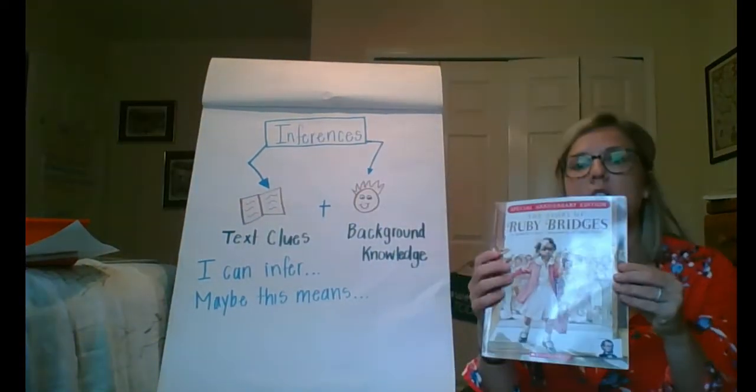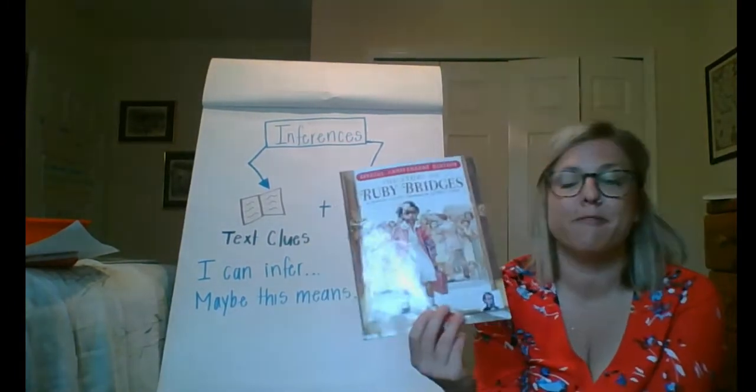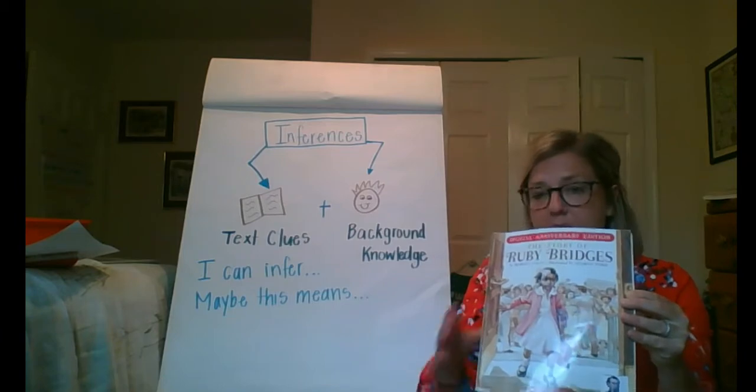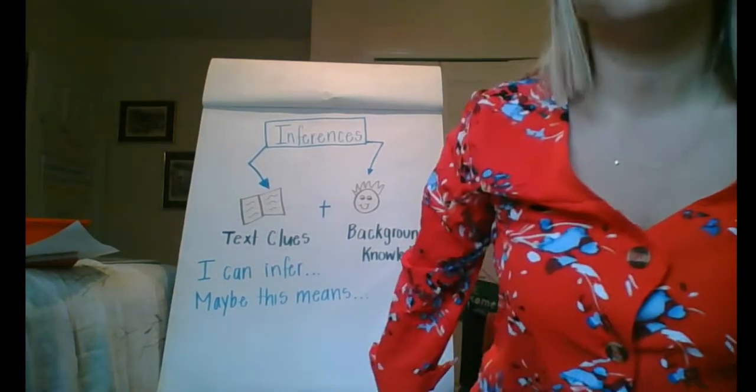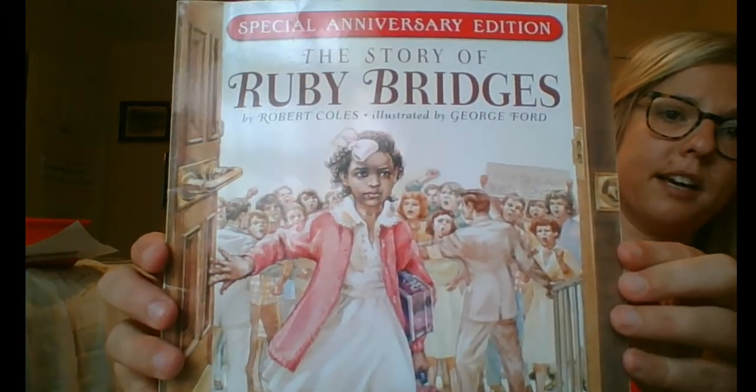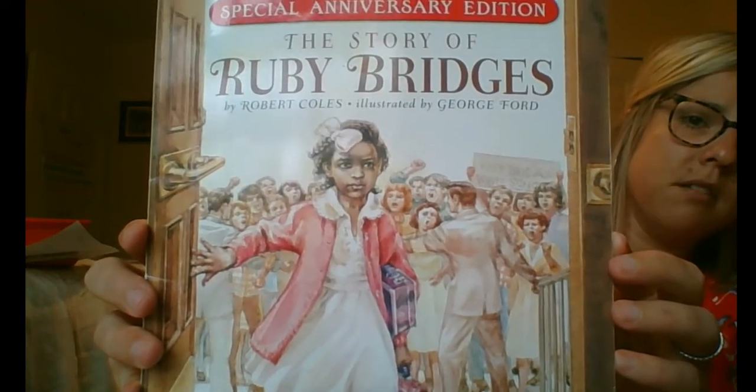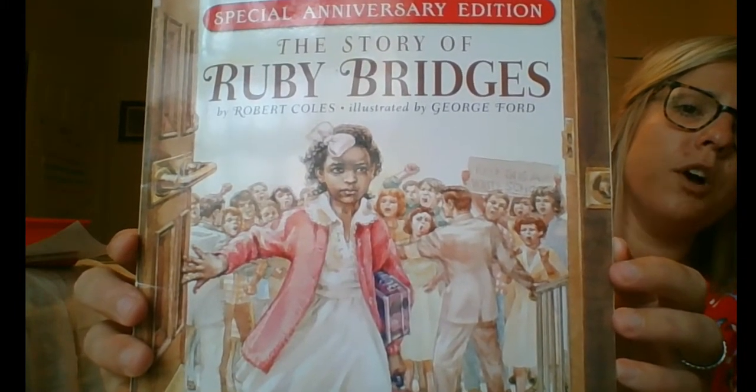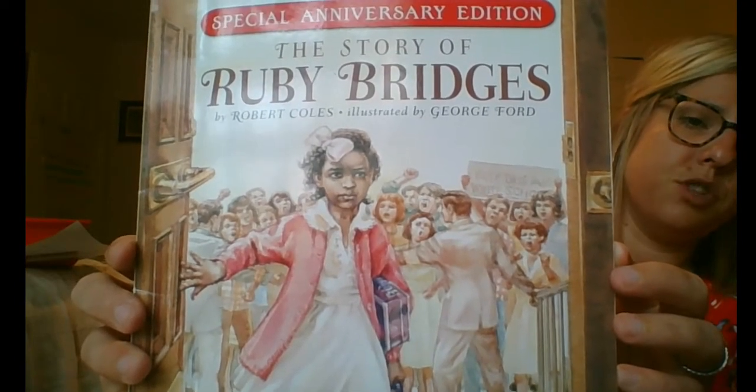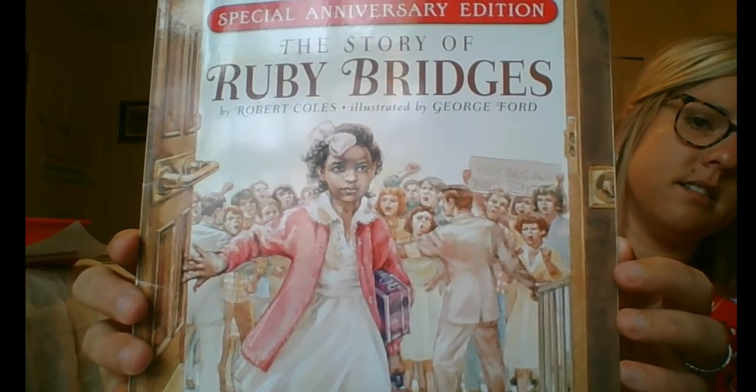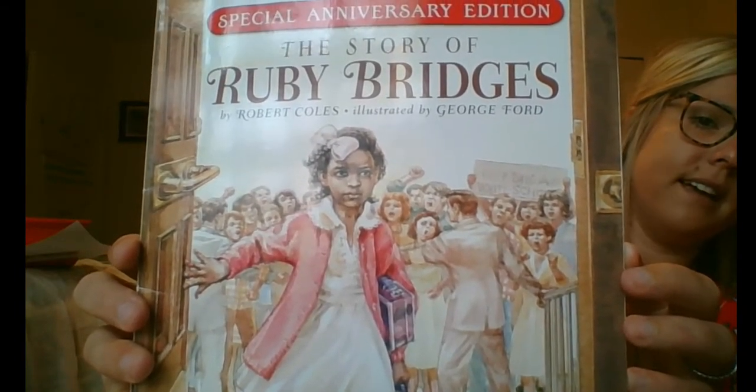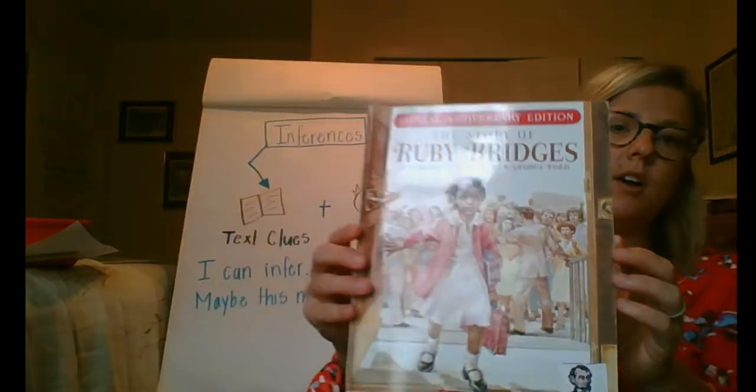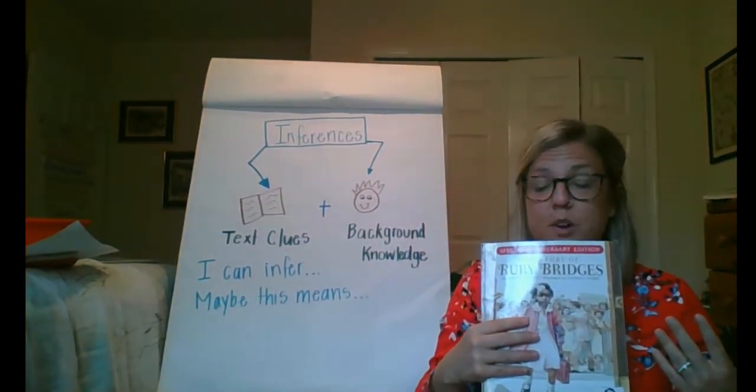Today we're going to focus on a book that some of you are very aware of or have read before. It's one of my favorite books called Ruby Bridges, and we're actually going to start by making an inference before I begin reading the story. I'm going to scoot a little bit closer to you right now, so you can see the picture. I want you to look at the people in the background, and I want you to look at Ruby. I want you to think about what you think Ruby's doing right now. Now, look at her face, and then look at the people in the background's face.